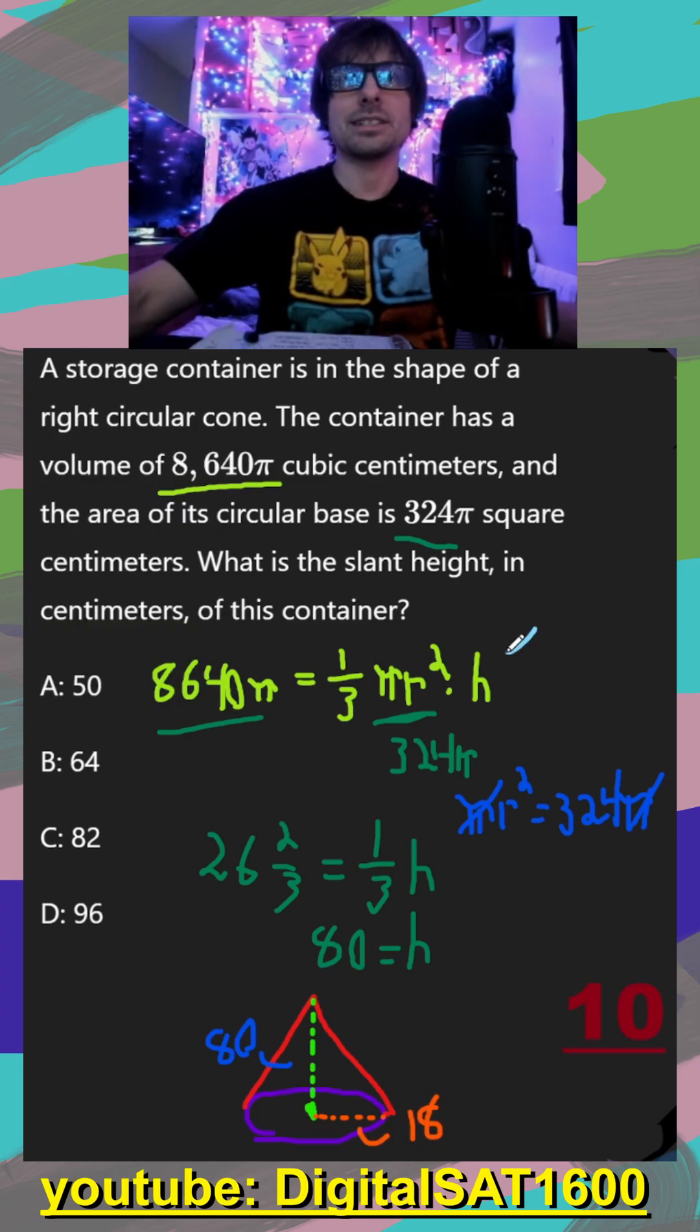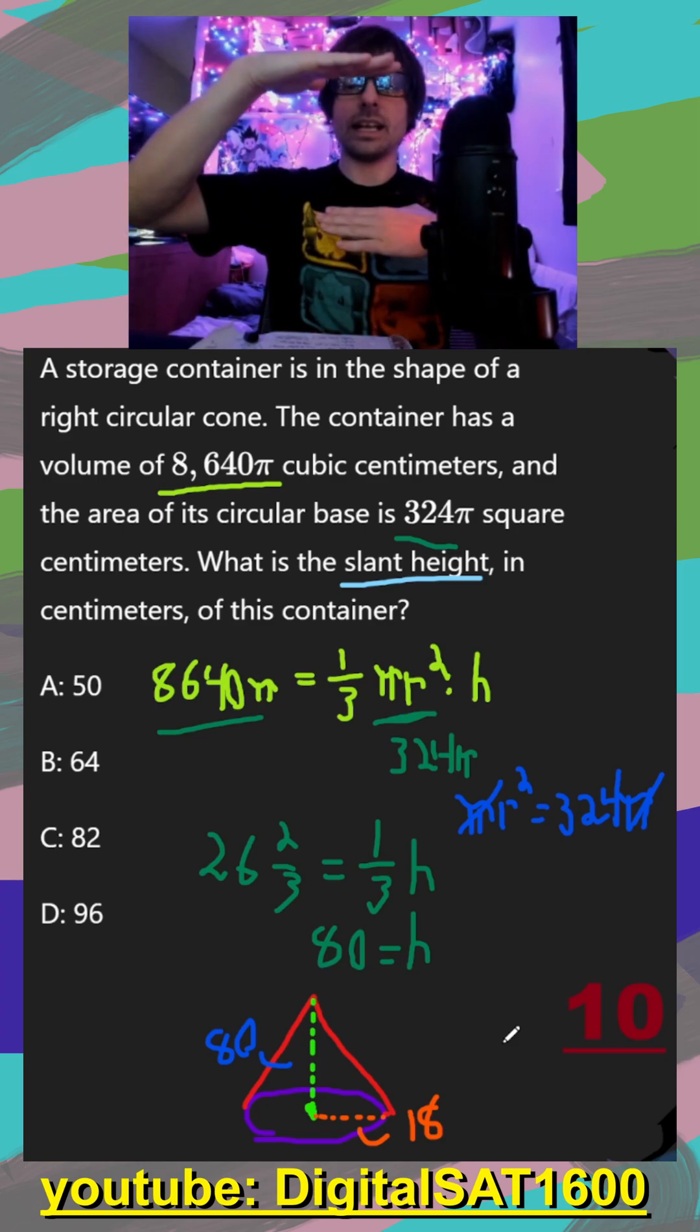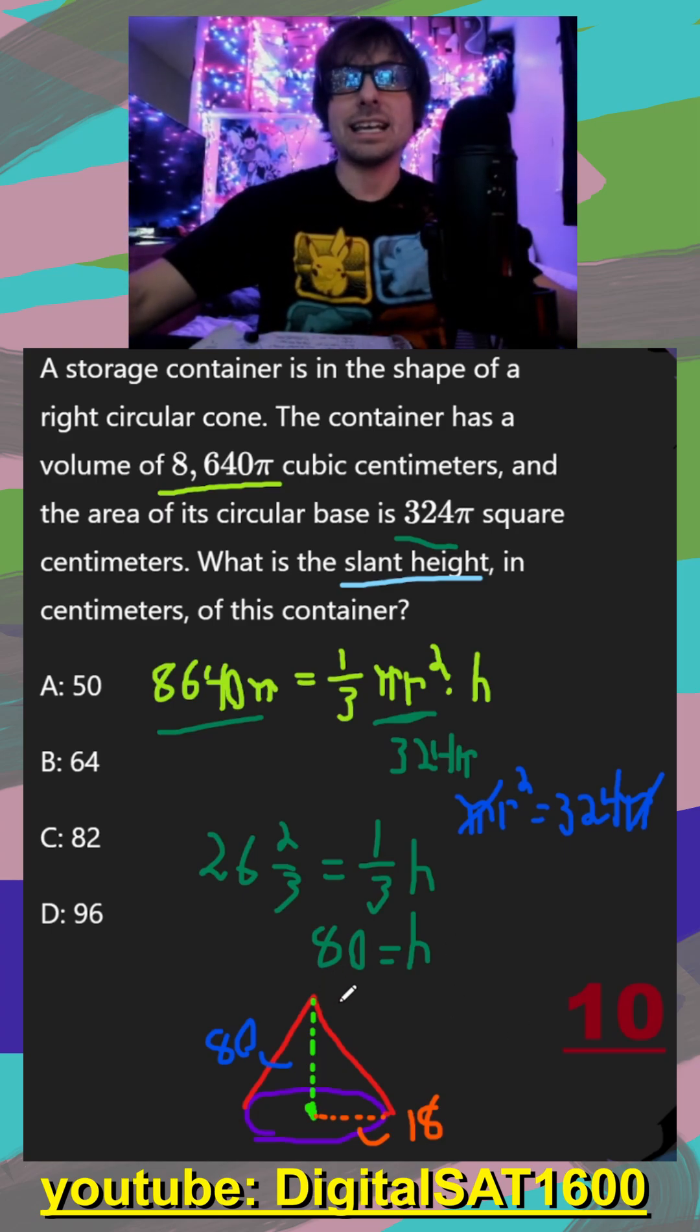And then finally, reading the rest of the question, they say, what is the slant height? So don't get your slant height confused with your actual height of your cone. Your height of the cone is if you're looking at it from the front, your slant height is this right here, which is just the hypotenuse of our triangle that involves our true height and our radius.